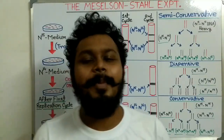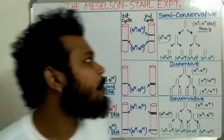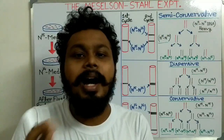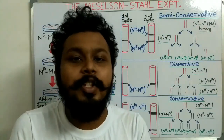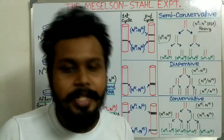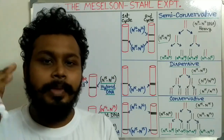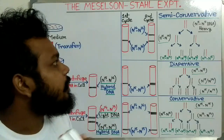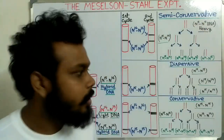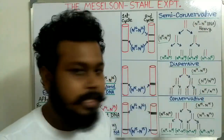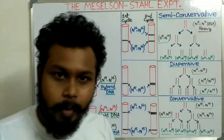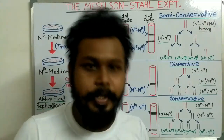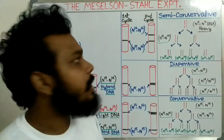Hello friends, today in this video I am going to discuss about the Meselson and Stahl experiment to prove the correct or actual model for DNA replication. At first, the three models for DNA replication are the semi-conservative model, dispersive model, and the conservative model, which I already discussed in my previous video.